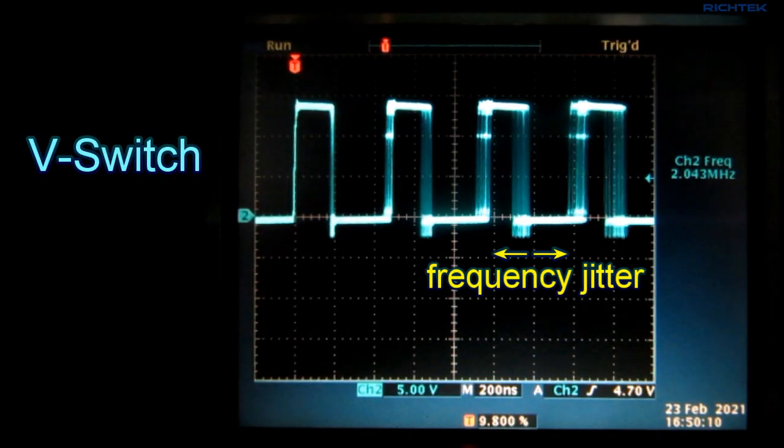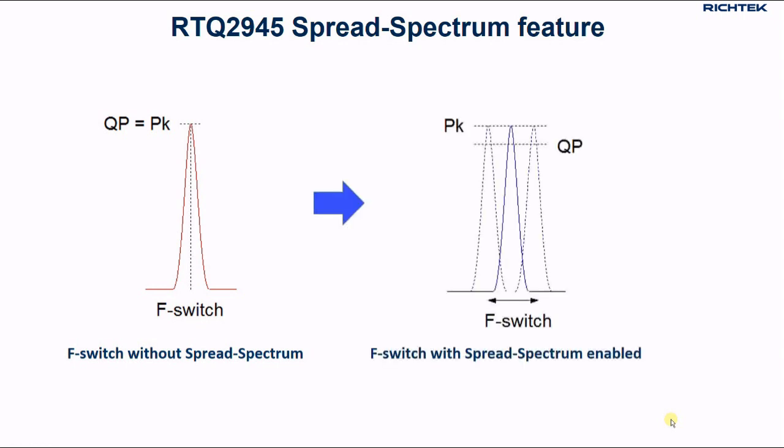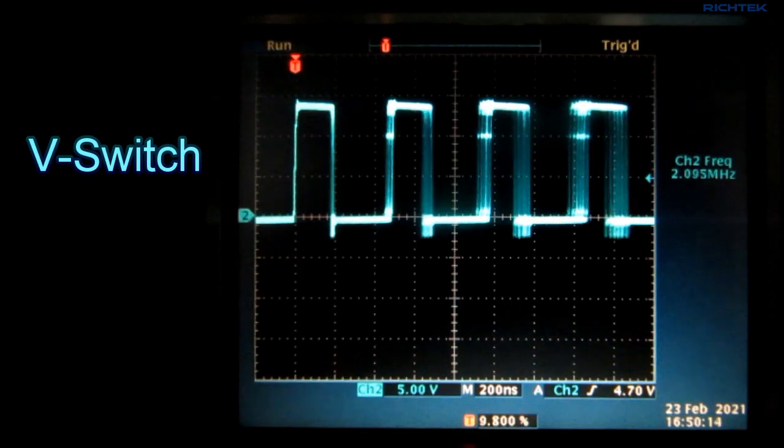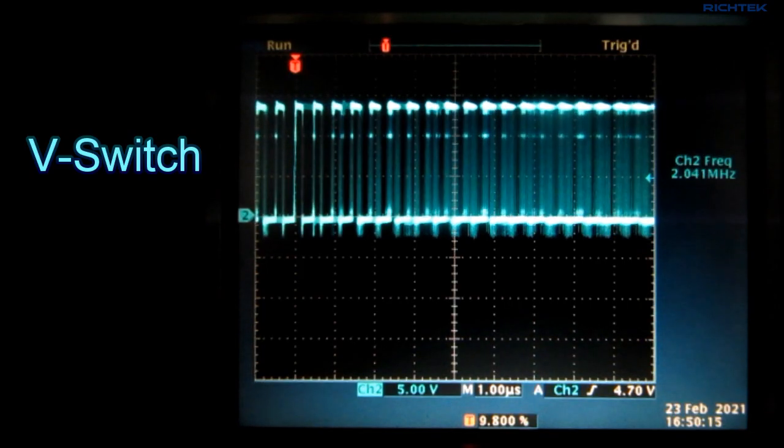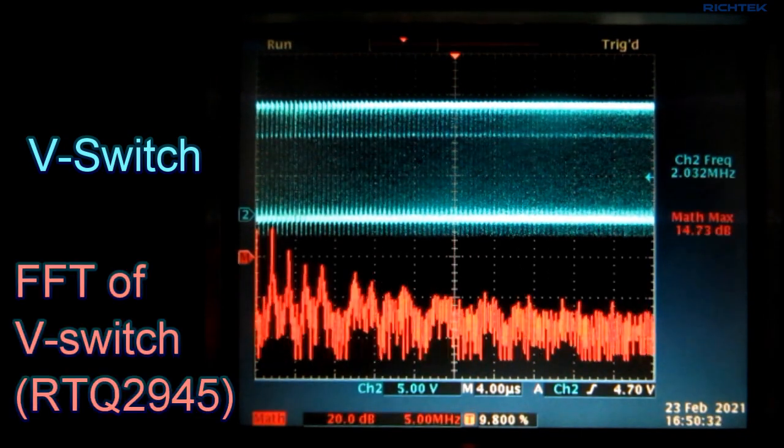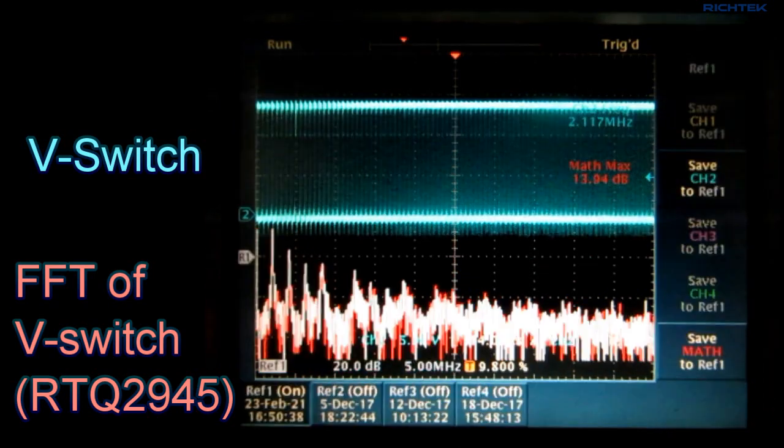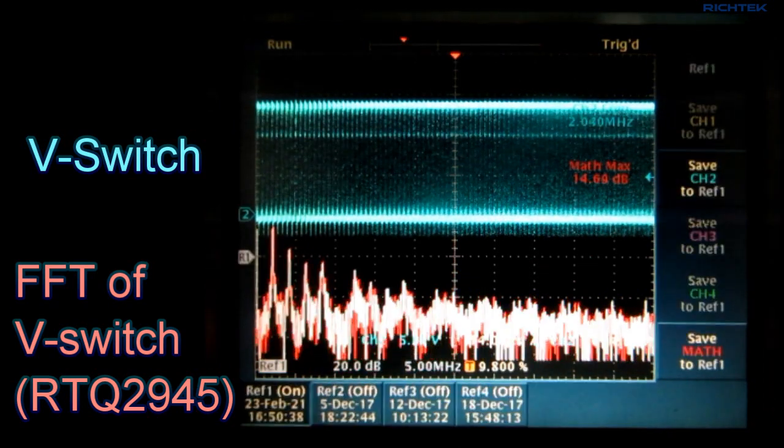You may have noticed some frequency jitter in the RTQ2945 switching waveform. This frequency jitter is caused by the spread spectrum feature. It can help to reduce EMI reading, especially the EMI that is caused by the upper harmonics of the switching frequency. Let's use the scope Fast Fourier Transform FFT function to show the frequency spectrum. You can see that the higher harmonics are not really visible. Let's store the FFT waveform.